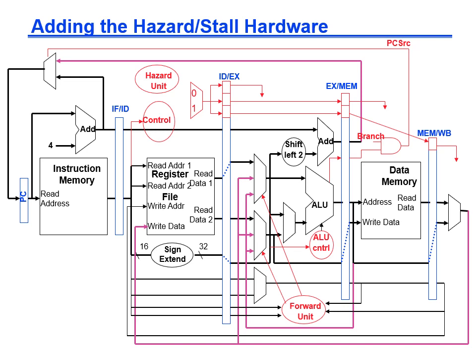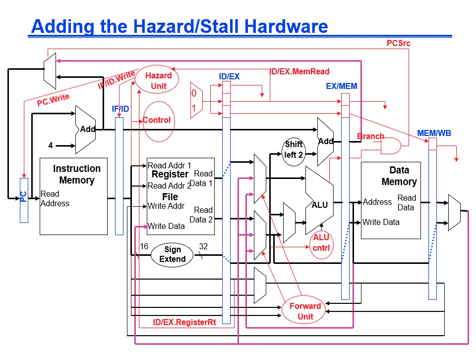Here we can see how the hazard detection unit fits in the pipeline. It gets the fetch/decode source registers from the instruction bits and receives the ID/EX RT and ID/EX MemRead from the interstage buffer of the preceding instruction. When a match is made, it disables writing of the PC and IF/ID interstage buffer and drives the control signal to zero. In reality, only the signals RegWrite and MemWrite need to be zero, as long as we prevent the stalled instruction from updating the state of the registers.